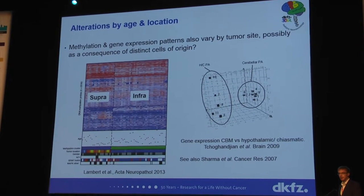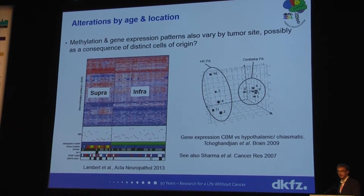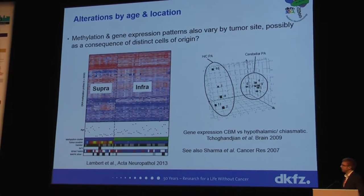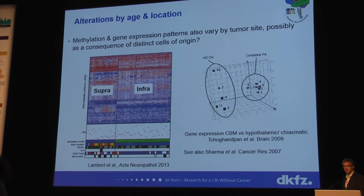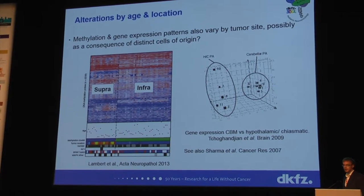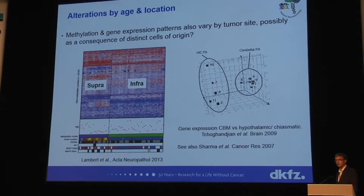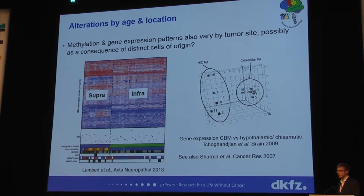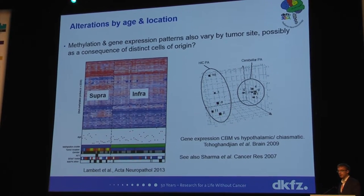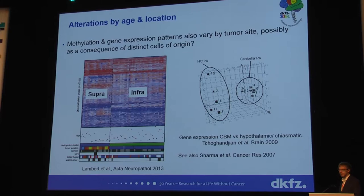That's also recapitulated on a gene expression and DNA methylation level — we know that supratentorial and infratentorial tumors can be split based on unsupervised analysis of either methylation or expression. I think that's telling us something about how the interaction with the cell of origin and the molecular hit on top are cooperating to drive oncogenesis within these tumors.